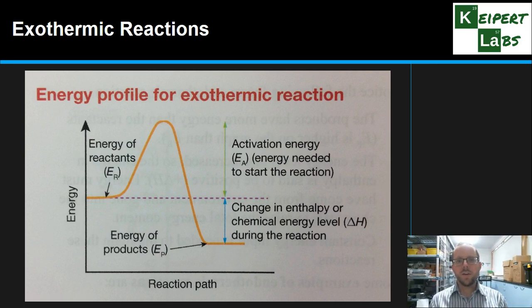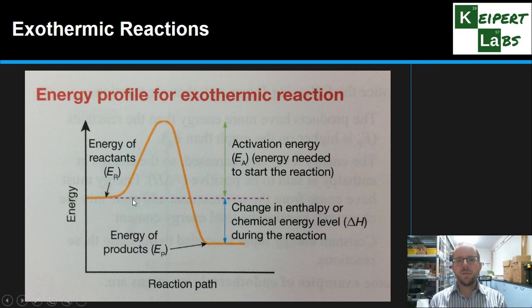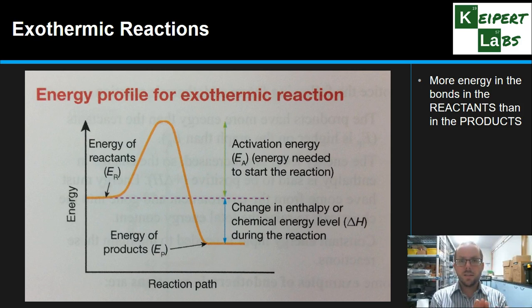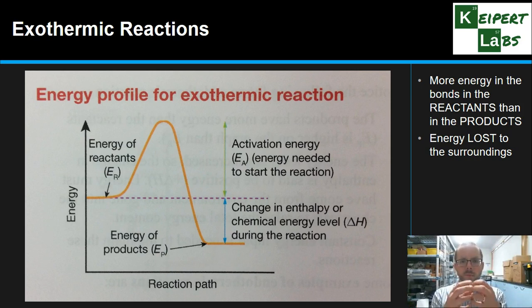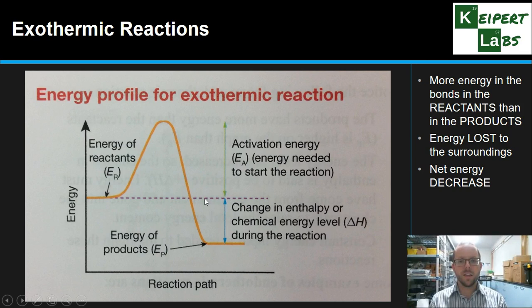Let's look at exothermic and endothermic chemical reactions. Some chemical reactions release energy to the surroundings and make them warmer — we call these exothermic. 'Exo' means out of, and 'thermic' refers to heat, so thermal energy goes out. In the diagram for an exothermic reaction, we still have our hill, and we have our reactants and products levels. But notice that the products level is lower than the reactants, represented by the purple line. There's more energy in the bonds of the reactants than in the bonds of the products, and the difference is energy lost to the surroundings. So there is a net energy decrease of the system, meaning the change in enthalpy — delta H — is negative.